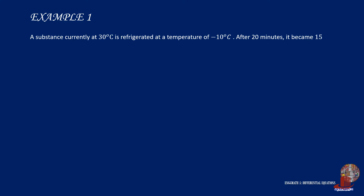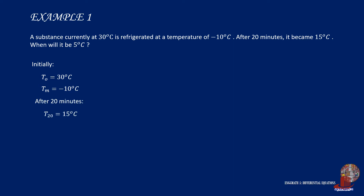Example number 1. A substance currently at 30 degrees Celsius is refrigerated at a temperature of negative 10 degrees. After 20 minutes, it became 15 degrees Celsius. When will it be 5 degrees? Let's list down all the givens starting with the initial values where the temperature of the substance is 30 degrees Celsius and the medium is negative 10 degrees. After 20 minutes, the temperature of the substance went down to 15 degrees Celsius, and the problem wants to determine the time it takes for the substance to reach 5 degrees.